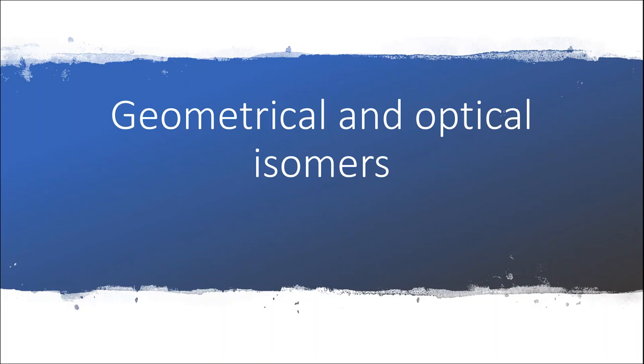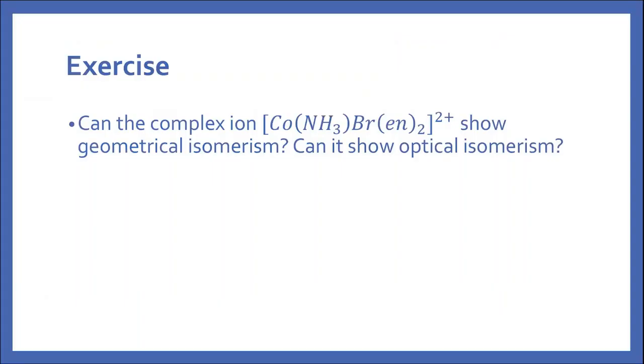This video is about geometrical and optical isomers. In this particular one we will look at the type of isomer in complex ions. For example, in this exercise question: can the complex ion as shown here show geometrical isomerism? Can it show optical isomerism?